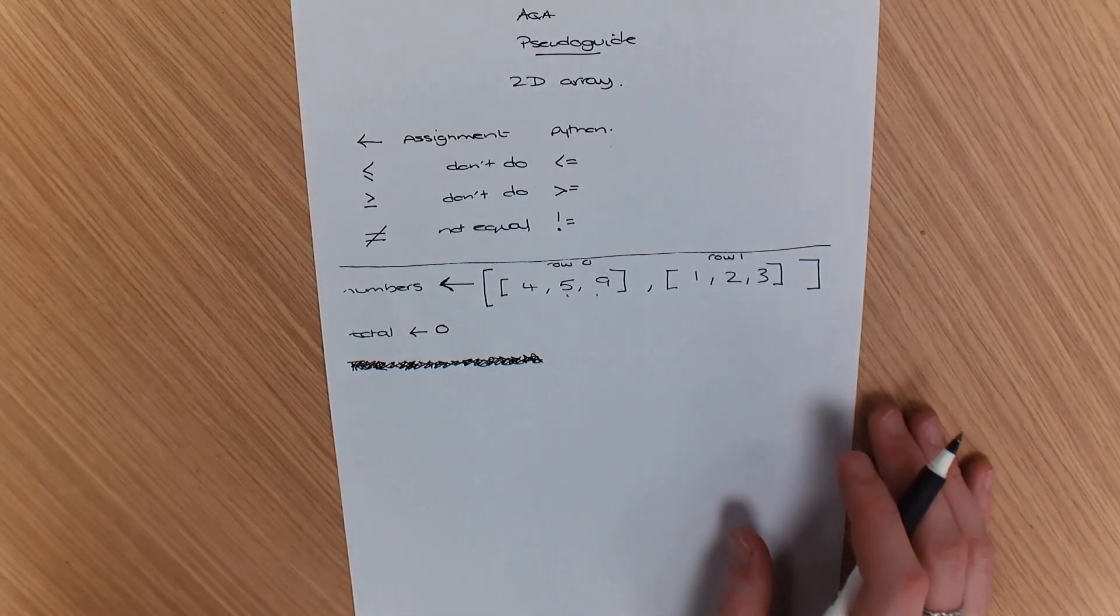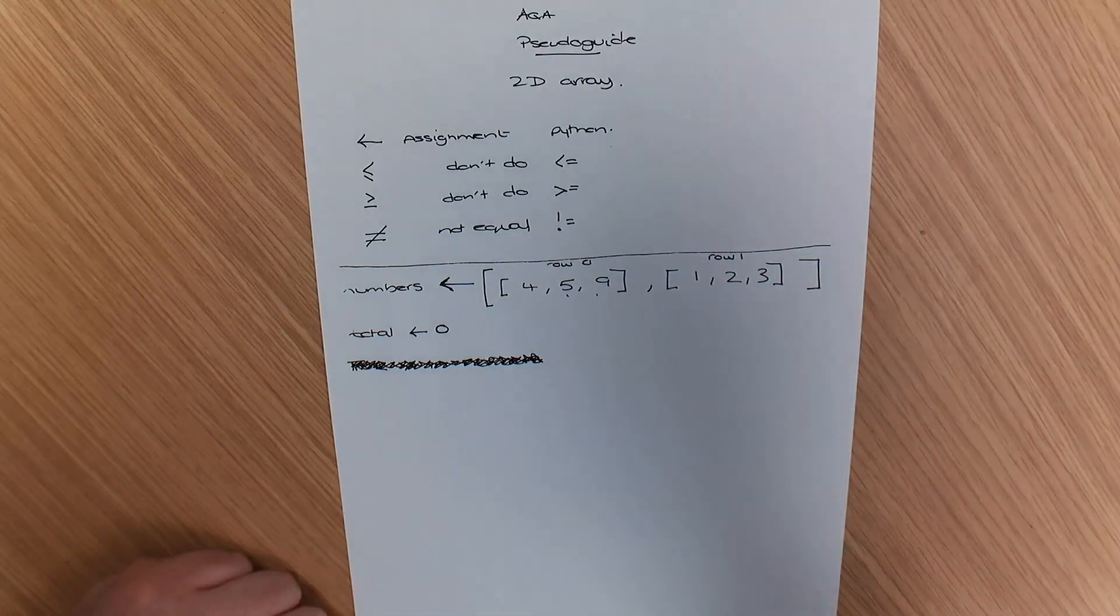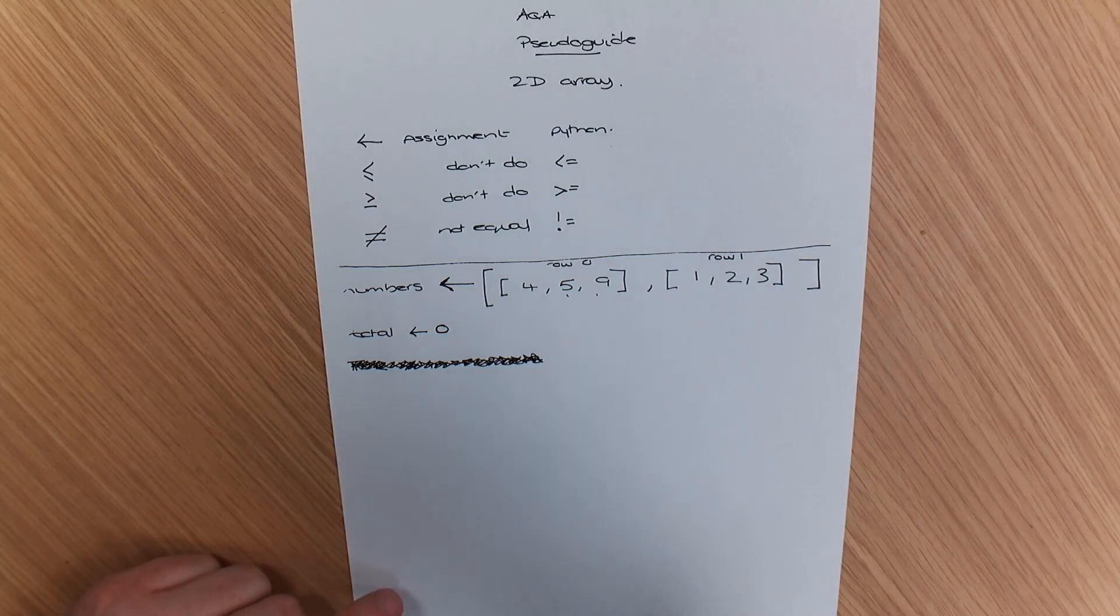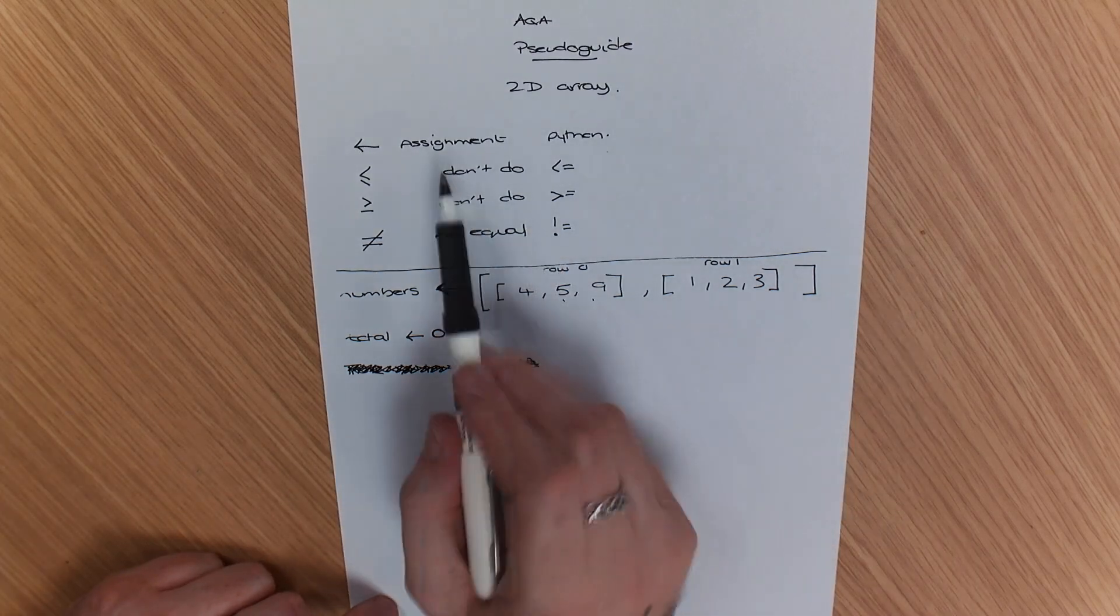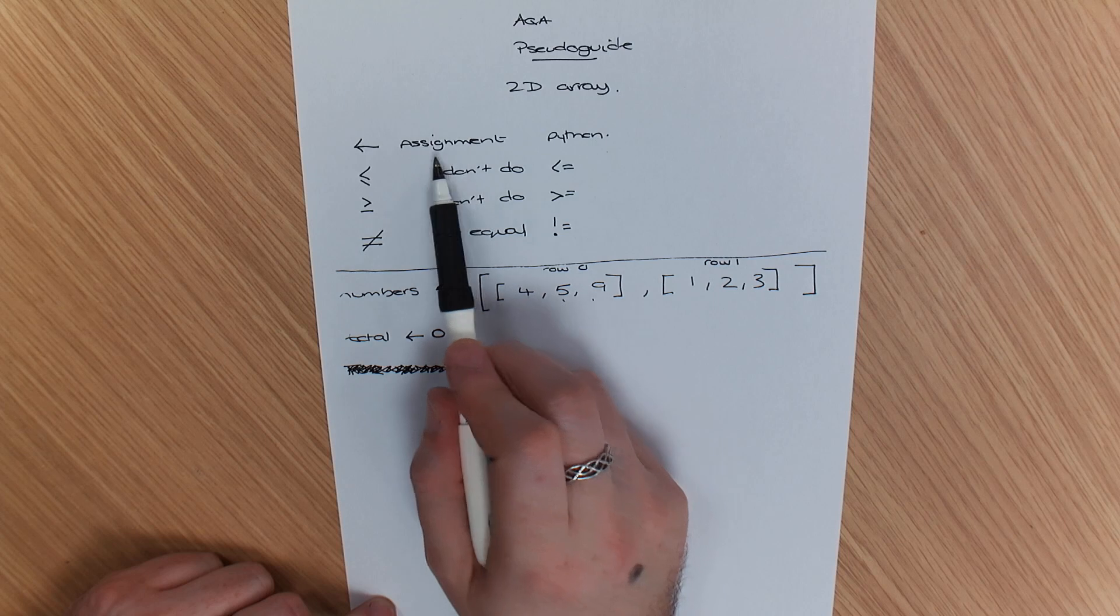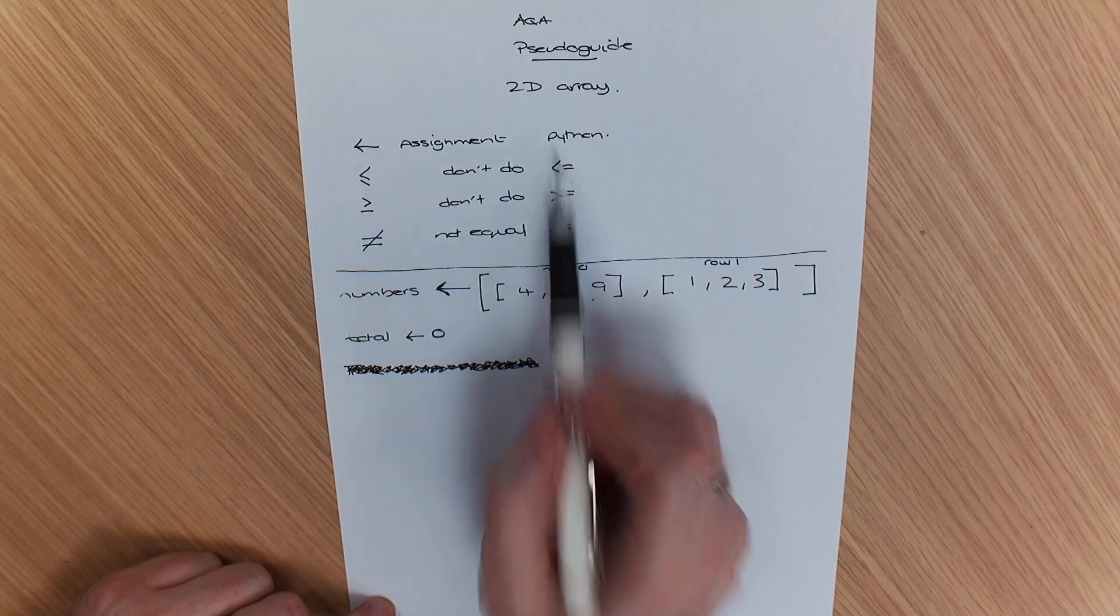Okay, so I'm going to be showing you 2D arrays in AQA pseudocode, but this is take two because I started to do a single array. But I'm just going to quickly recap over how pseudocode works and how Python works.